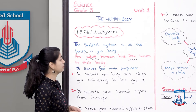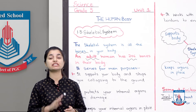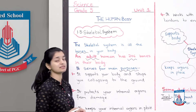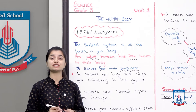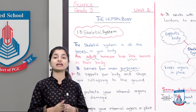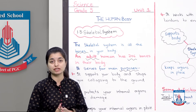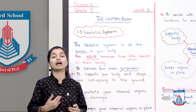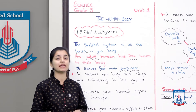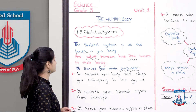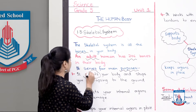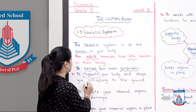Our skeletal system serves four main purposes. These are the reasons why our skeletal system exists and what it is doing — how it performs and what obvious reasons explain why our skeletal system is structured this way.